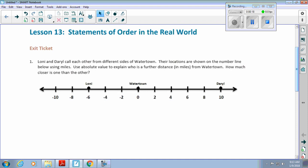We have Lesson 13, Exit Ticket Here, Statements of Order in the Real World. The first question says Lonnie and Daryl call each other from different sides of Watertown. You'll notice that Watertown is located right here at Point Zero. Their locations are shown on the number line using miles. Use absolute value to explain who is a further distance from Watertown.